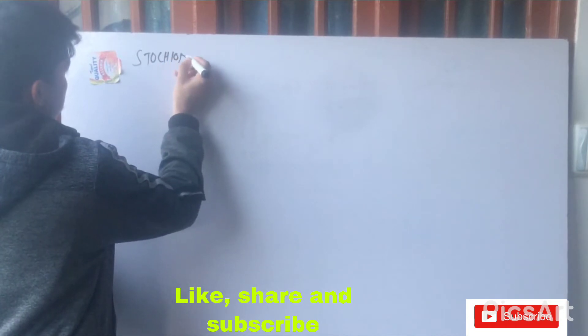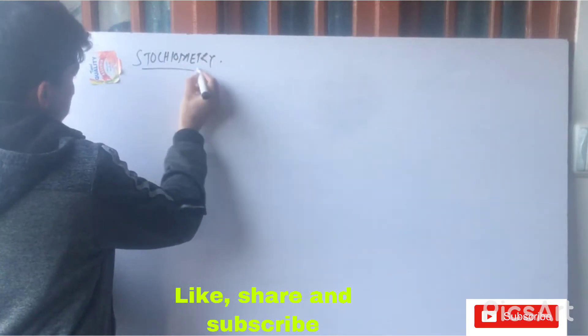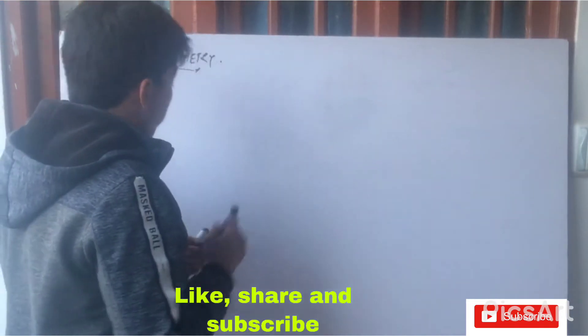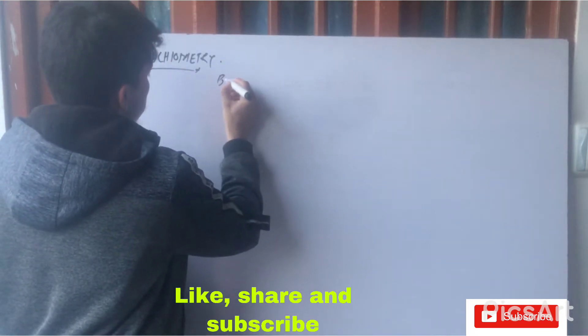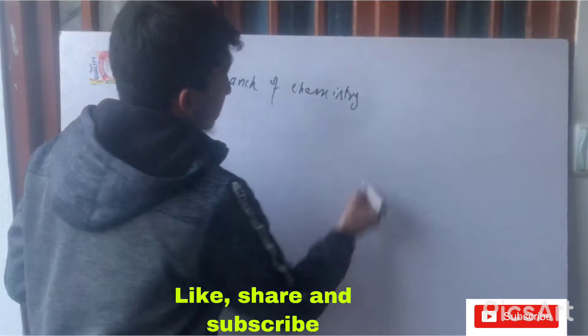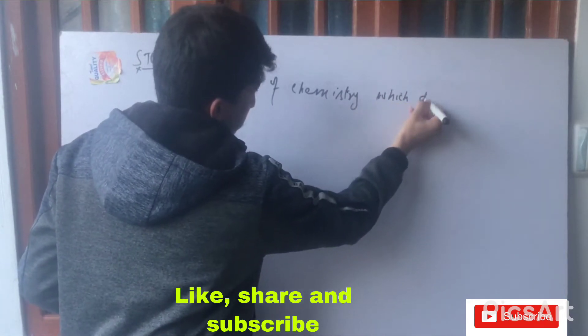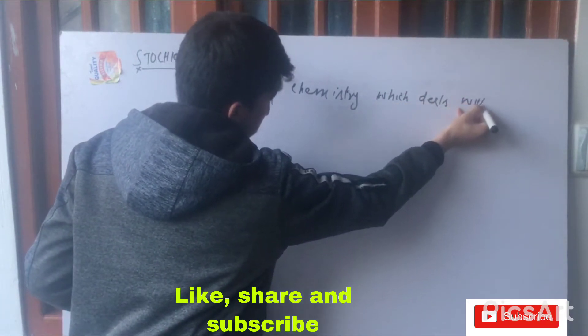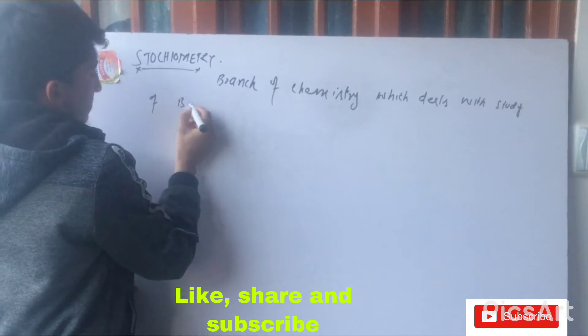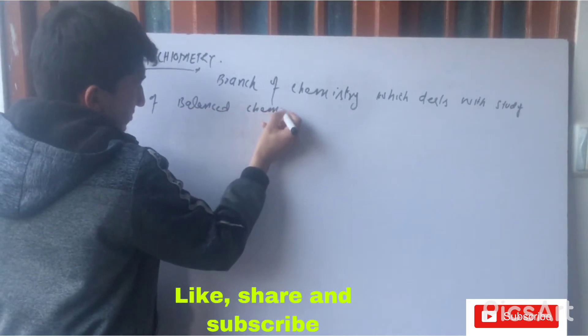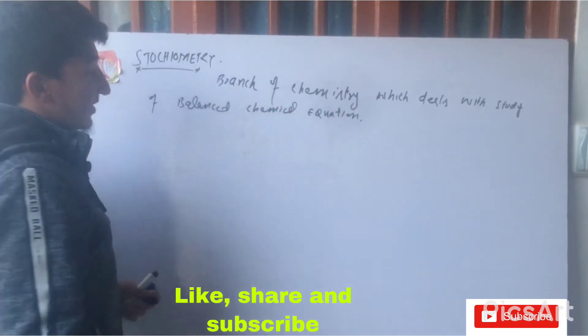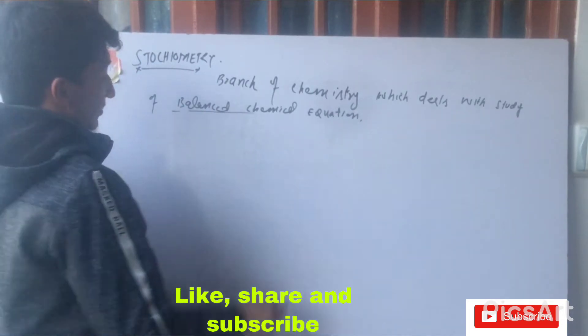First of all, stoichiometry. We would define stoichiometry as the branch of chemistry which deals with the study of balanced chemical equations. In this case we will see the balanced chemical equation.